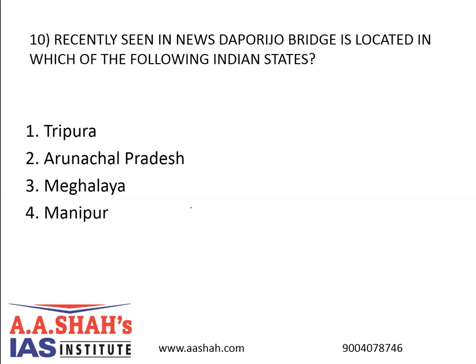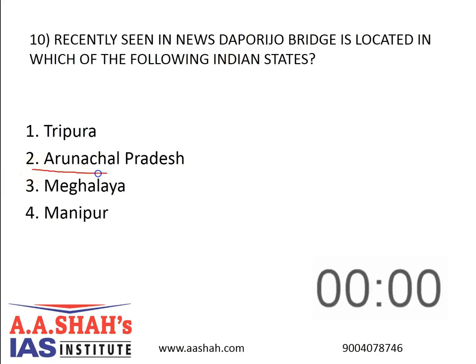Last question. Recently seen in news, the Porijo bridge is located in which of the following Indian states? One: Tripura. Two: Arunachal Pradesh. Three: Meghalaya. Four: Manipur. The correct answer is two — Arunachal Pradesh. Project Arunang aims to reconstruct the Dapurijo bridge across the Subansiri river in Arunachal Pradesh. It is being implemented by the Border Roads Organization. The bridge is the only line of communication to 451 villages located on the China border. Here's the question for the day — mention in the comment section: Subansiri is a tributary of which river? Let's see if you can get it right.